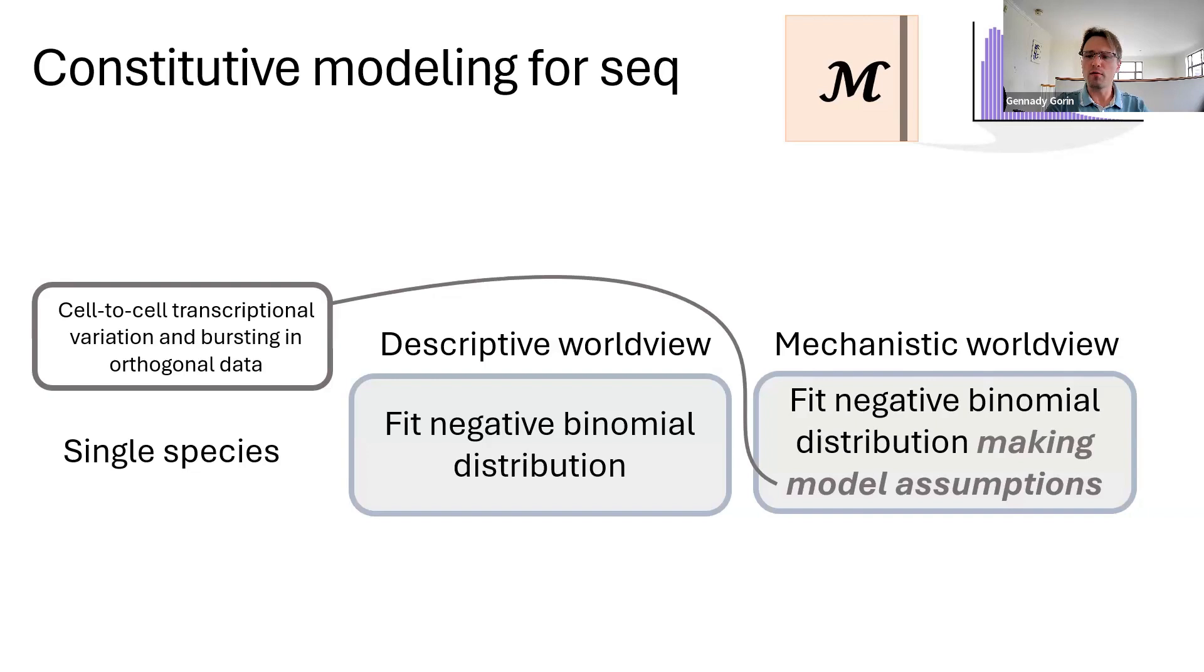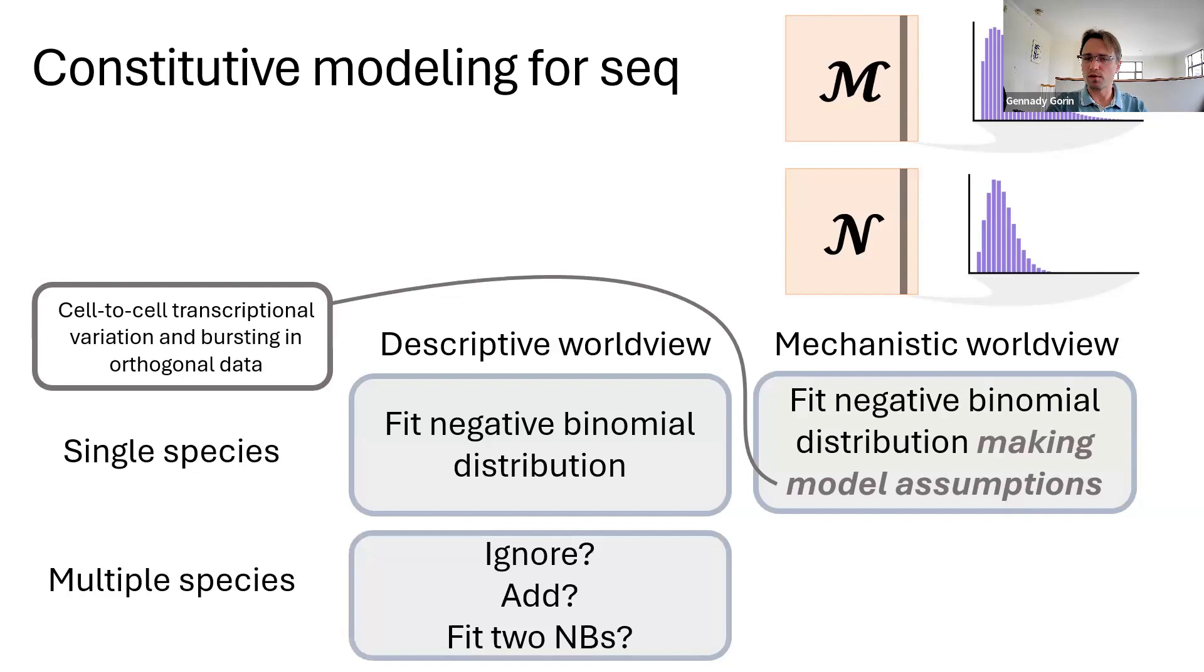But the difference is coming to really sharp relief if we obtain some multimodal data like nascent or unspliced counts. Still a matrix, still a negative binomial. What do we do? Well, the descriptive worldview does not have a prescription for this. What we usually do for single cells throw away this data. What we do for single nucleus or the most recent version of cell rangers add the two matrices. I suppose you could fit two negative binomials. Nobody really does this.